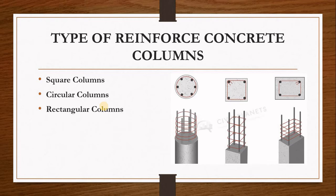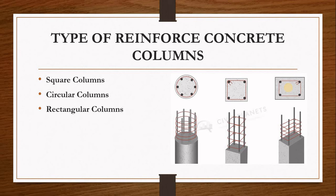Now we need to look at the types of reinforced concrete columns we are going to be designing. There are three types of columns a structural designer will design: the first is square columns, the second is circular columns, and the third is rectangular columns. As you can see in the image on the right, the first is the circular column, the second is the square column, and the third is the rectangular column.